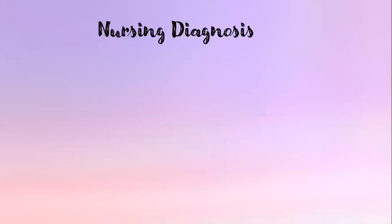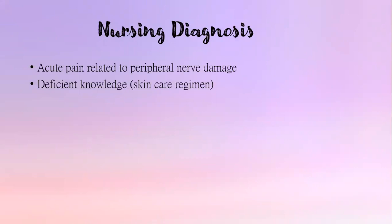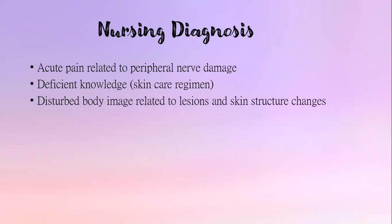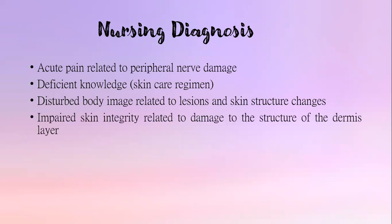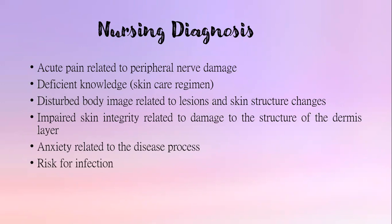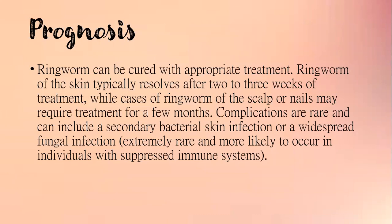For the nursing diagnosis, we have: acute pain related to peripheral nerve damage, deficient knowledge regarding skin care regimen, disturbed body image related to lesions and skin structure changes, impaired skin integrity related to damage to the structure of the dermis layer, anxiety related to the disease process, and risk for infection. For prognosis, tinea can be cured with appropriate treatment. Ringworm of the skin typically resolves after 2-3 weeks of treatment, while ringworm of the scalp or nails may require treatment for a few months. Complications are rare and can include secondary bacterial skin infection or widespread fungal infection, more likely in individuals with a suppressed immune system.